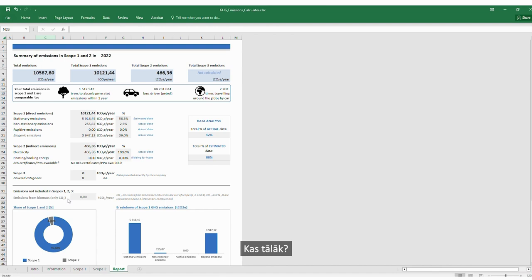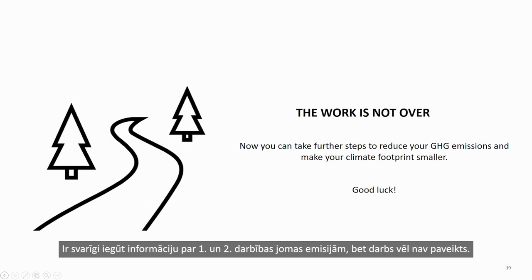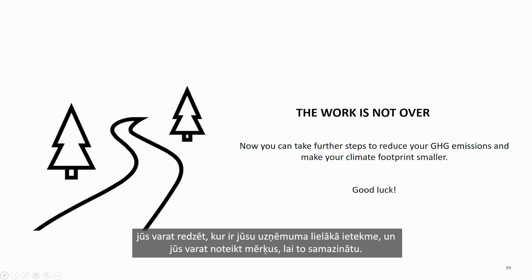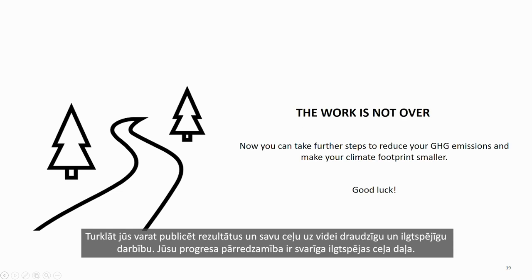Now your results are complete. Getting the information on Scope 1 and 2 emissions is important, but the work is not done yet. If you have not done so, calculate Scope 3 emissions. By gathering data and seeing it through the emission scope lenses, you can see where your company's largest impact is and set targets to reduce it. By developing an action plan with defined responsibilities, you can ensure progress towards minimizing your impact. Additionally, you can communicate the results and your journey towards an environmentally friendly and sustainable way of working. Transparency about your progress is an important part of the sustainability journey.